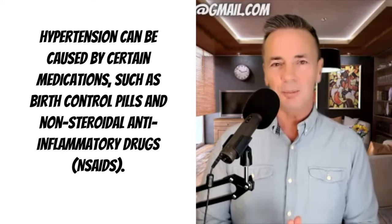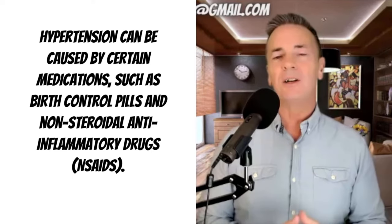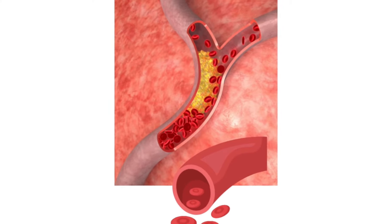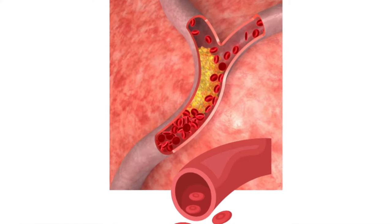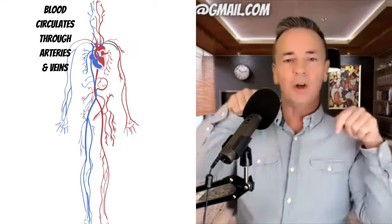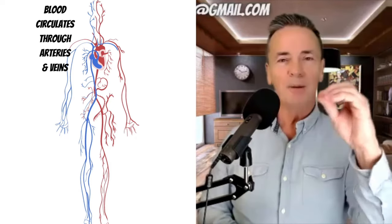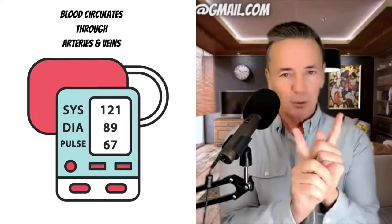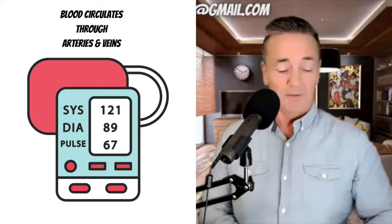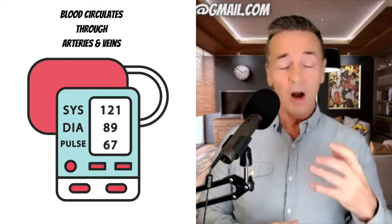Blood pressure is actually a response — your body will put your blood pressure up or lower it in certain situations. It's all about the delivery of blood. You have arteries, which are essentially long tubes, and when your heart beats and pushes blood out, it exerts pressure against those walls — that's the systolic pressure, the top number.